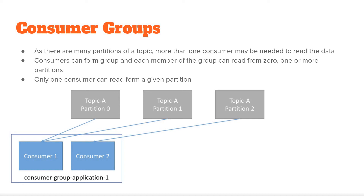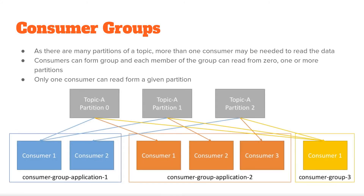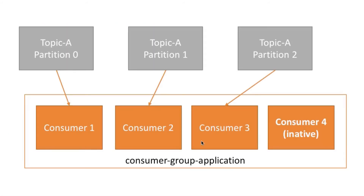In the diagram, a consumer group with two consumers shows consumer 1 reading from partitions 0 and 1 of topic A, while consumer 2 reads only from partition 2. Another consumer group has three consumers, each reading from one partition of topic A. A third group has a single consumer reading from all partitions. In the last case, the consumer group has more consumers than partitions, so consumer 4 sits idle and does not consume any messages.